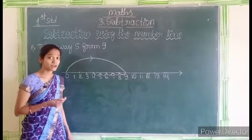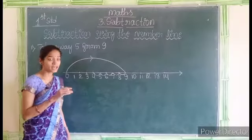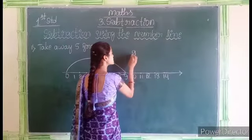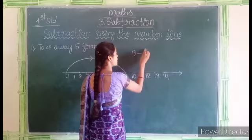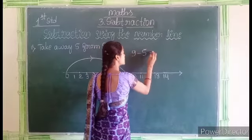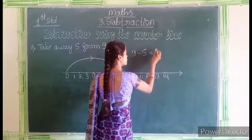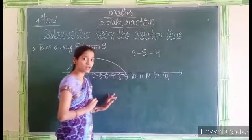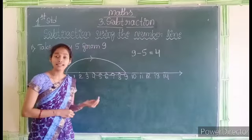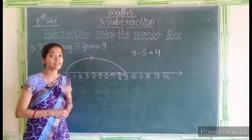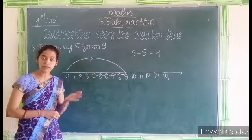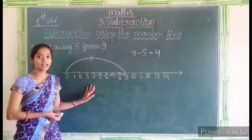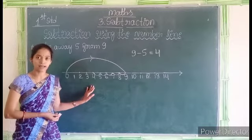When we take away 5 from 9, we get 4. That means 9 minus 5 is equal to 4. Have you understood? Like this, we can subtract a small number from a big number using a number line.